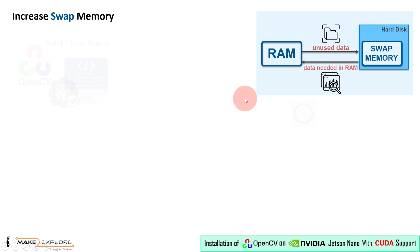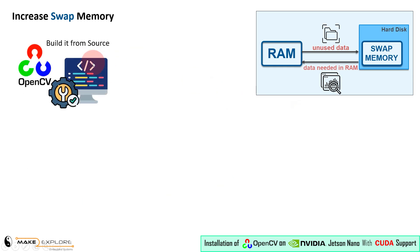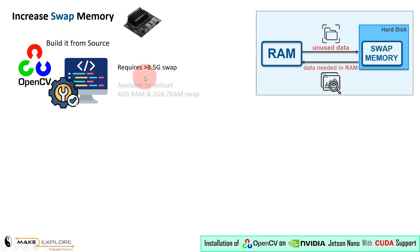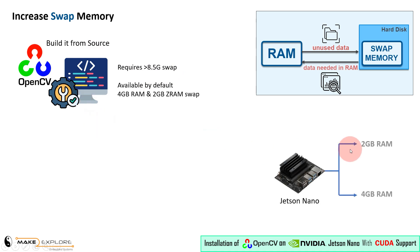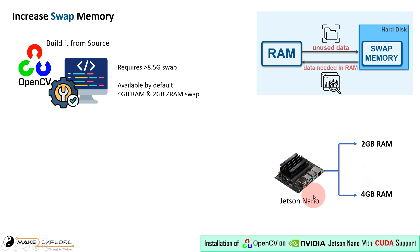Please note that building the complete OpenCV package by utilizing all four cores of Jetson Nano requires more than 8.5 gigabytes of swap memory. We know that Jetson Nano comes with two variants — 2 gigabytes RAM and 4 gigabytes RAM. Please note that we have tested this OpenCV installation procedure with the 4GB variant of Jetson Nano, which is currently available with us.